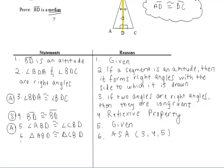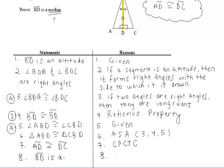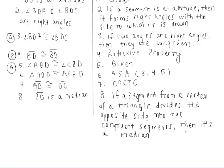Now remember, after we prove triangles congruent, we want to use CPCTC. We want to prove that BD is a median, so we're going to use CPCTC on those two segments. We can say that segments AD and DC must be congruent by CPCTC. And if that's the case, then BD must be a median. This is another one of our new reasons: if a segment is drawn from a vertex of a triangle and divides the opposite side into two congruent segments, then it is a median.